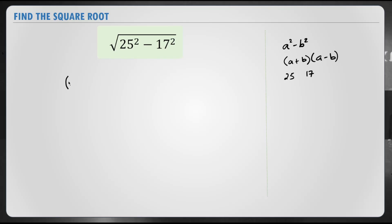So 25 squared minus 17 squared would be equal to (25 minus 17) into (25 plus 17), and the square root of that. 25 minus 17 is equal to 8 and 25 plus 17 is 42, meaning the square root of that.